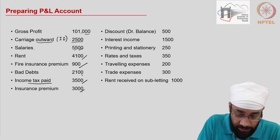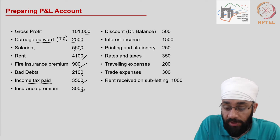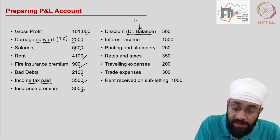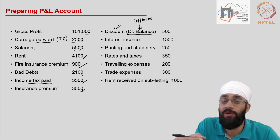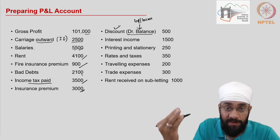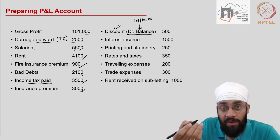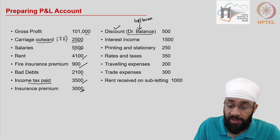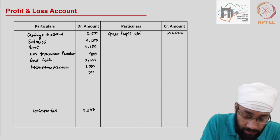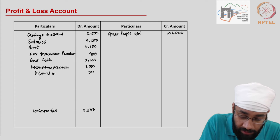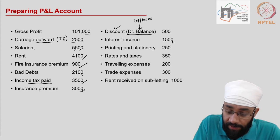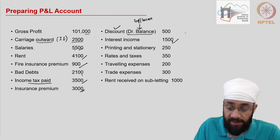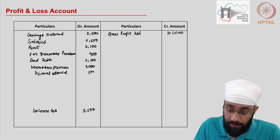Insurance premium of three thousand is done. Then you have discount with a debit balance — we know only expenses and losses have a debit balance, so this is an expense. Discount is a kind of promotional expense — you offer customers discounts to buy from you or to pay earlier. This goes to the debit side: five hundred. This is discount allowed to customers. Then you have interest income — this is an income and will go to the credit side as non-operating income: one thousand five hundred.